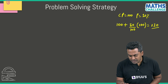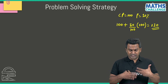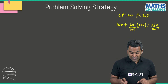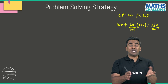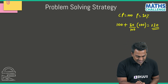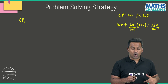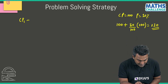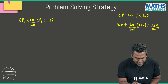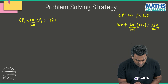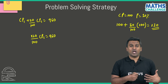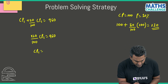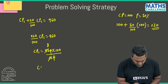That gives a selling price of 130 — fairly simple. For a loss, you would subtract. Now here we don't know the cost price, so let's assume the cost price of the phone is CP1. Since we made a 20% profit: CP1 + 20% of CP1 = 960, which simplifies to 120% of CP1 = 960. Solving, CP1 = 960 × 100 / 120 = 800. So the cost price of the phone was $800.